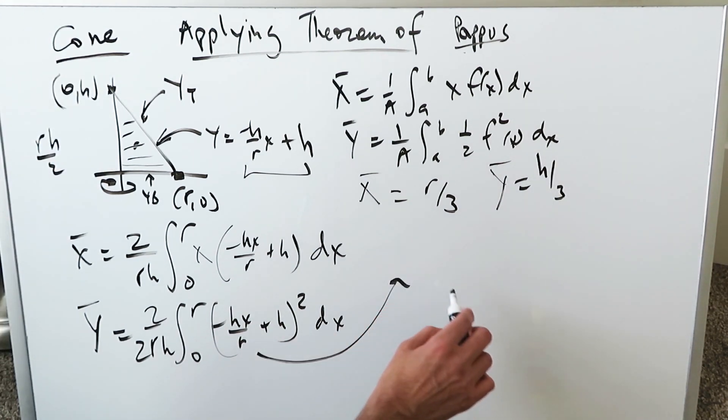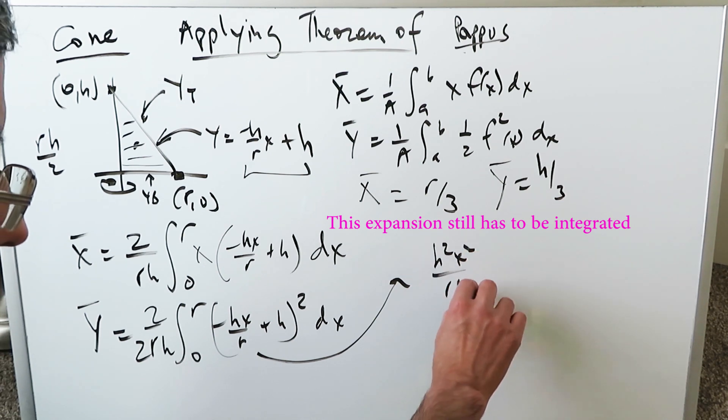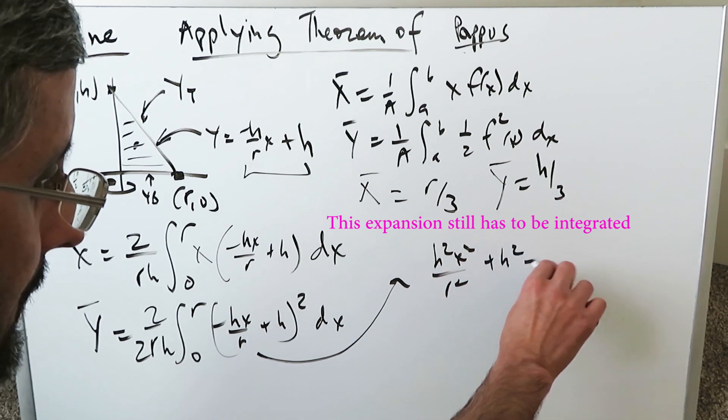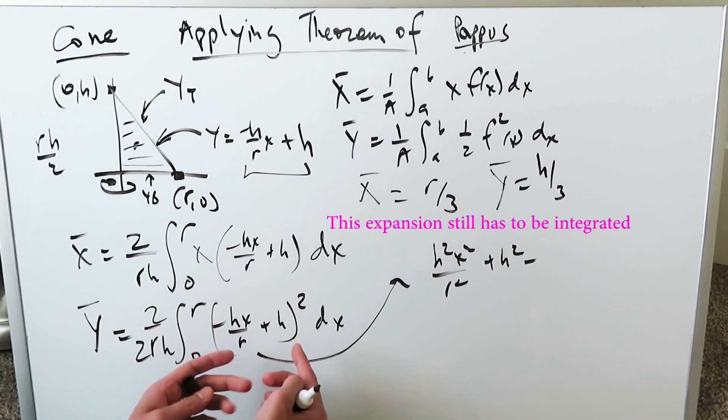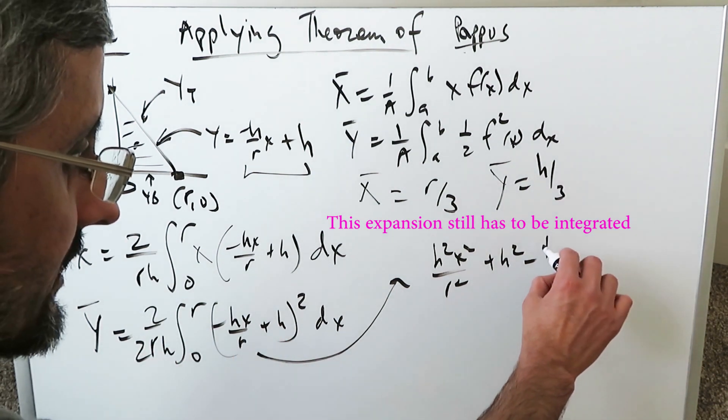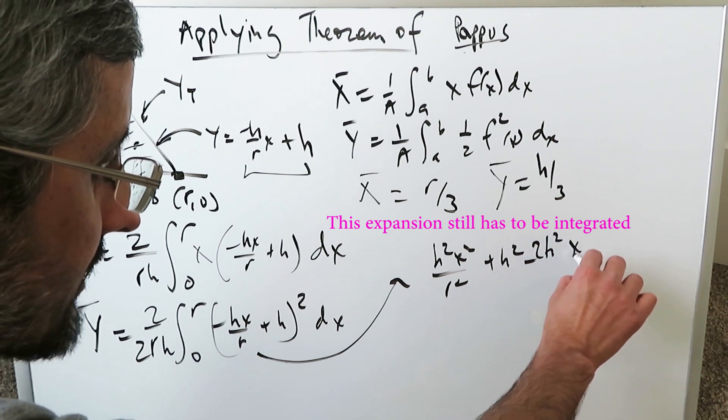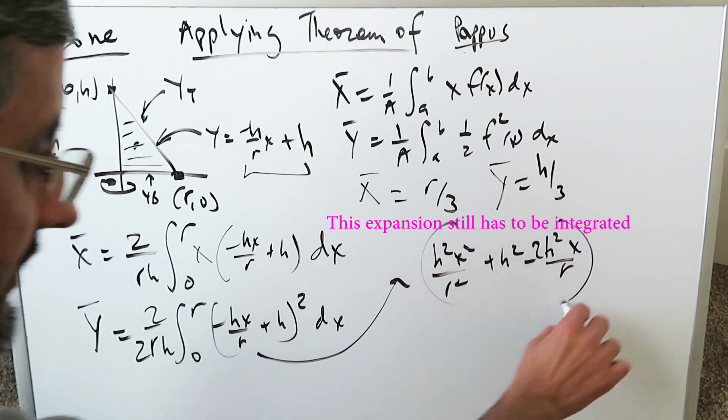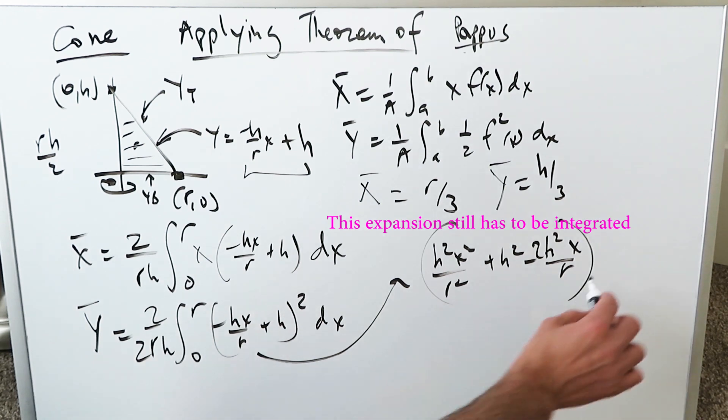Just to get you started, just looking right over here, you would have to open this up. You'll have h squared x squared over r squared plus h squared minus—then you know you have a squared plus b squared minus 2ab. Here you have the minus 2ab factor. You'll have minus 2h squared x over r. And then obviously when you look here, 2 over 2rh is 1 over rh.